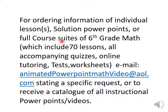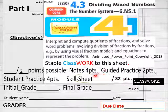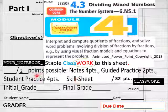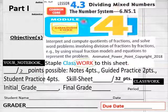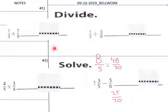Hello everybody, getting ready to do Lesson 4.3 of 6th grade math part 1. Today we have a 32-point skill sheet for classwork and two points of note-taking. 4.3 is dividing mixed numbers. Here's your standard — it is part one.